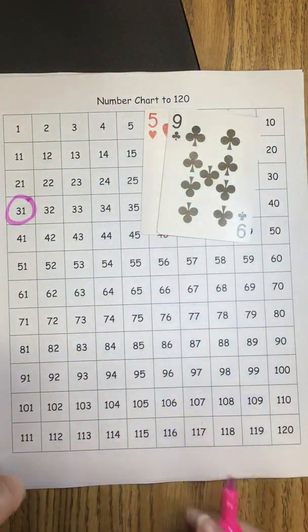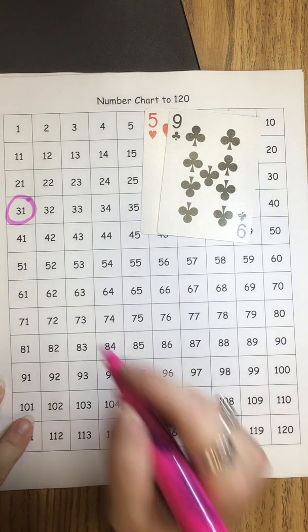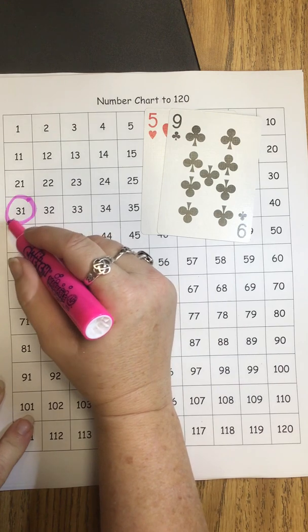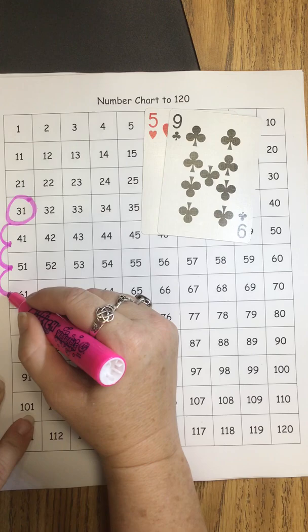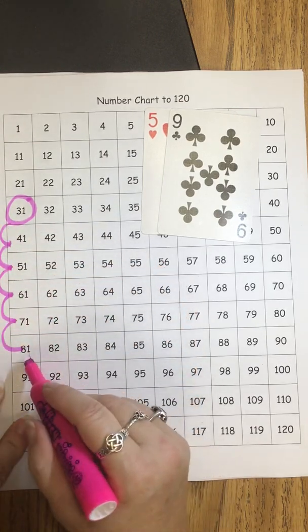That means I'm adding 5 tens and 9 ones. So I'm going to count 5 tens going down. So 1 ten, 2 tens, 3 tens, 4 tens, 5 tens. I'm making 5 jumps.